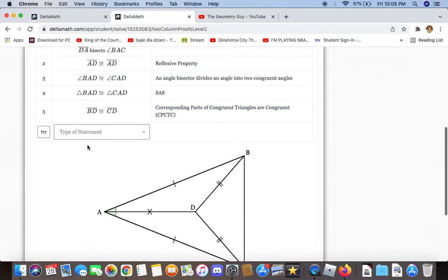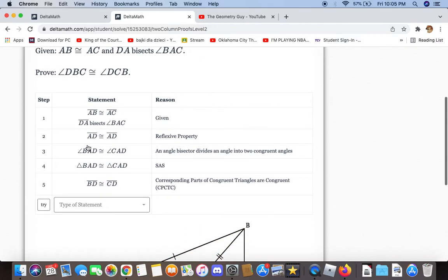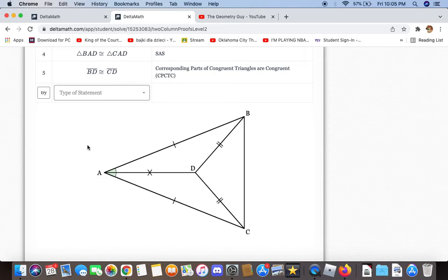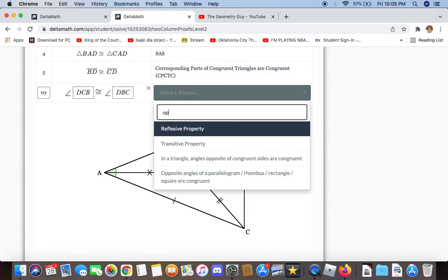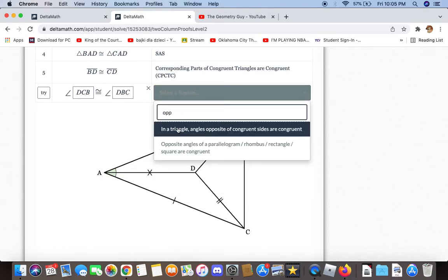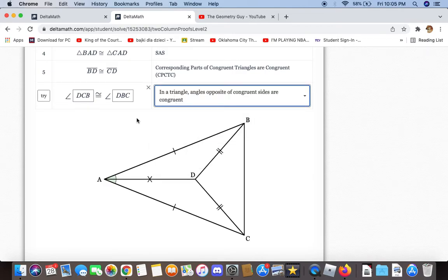We can now say that angles DBC and DCB are congruent to each other, and the reason for that is in a triangle, angles opposite of congruent sides are congruent.